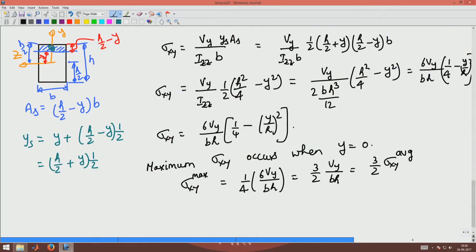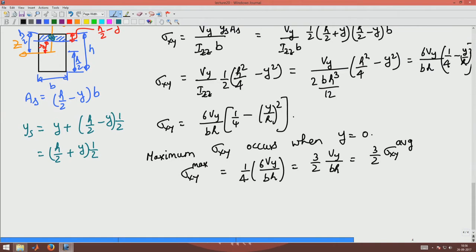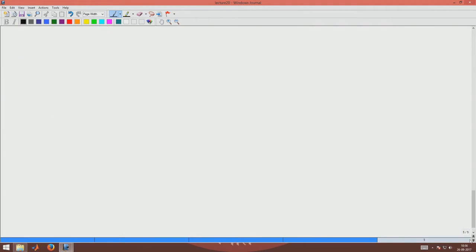Now, till now we have been analyzing the section with the rectangular cross section, right? Now for a change let's analyze the section with the I section and see what changes in our computations when a simply supported beam has an I section.